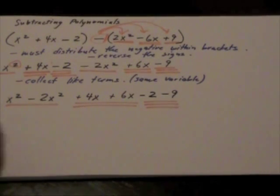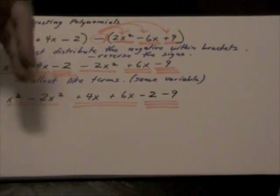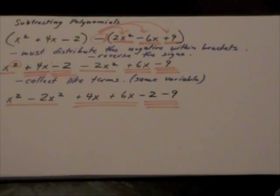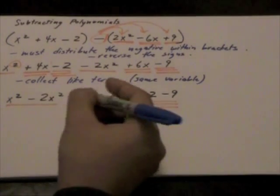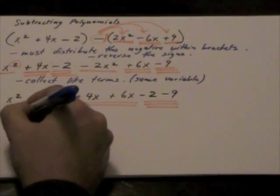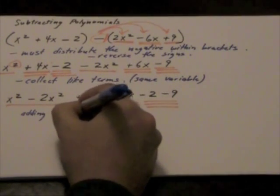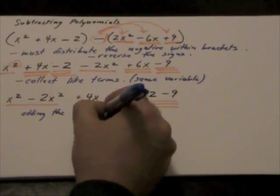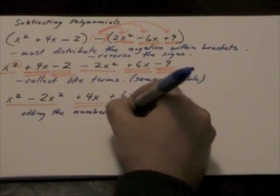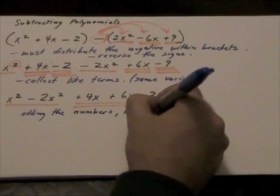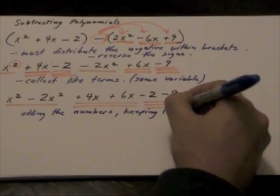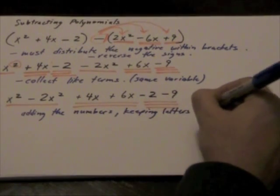And remember that when we are collecting the like terms and once we have collected what our like terms are, we are just adding the numbers and we are keeping the letters the same.